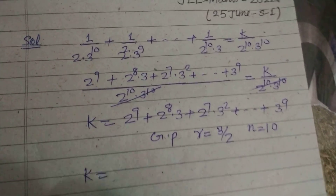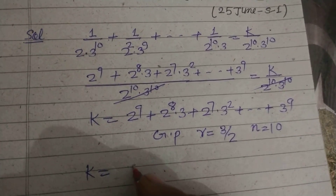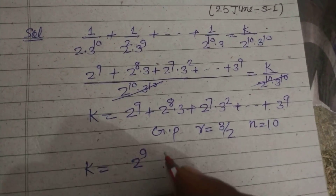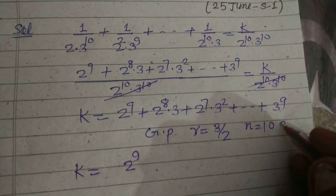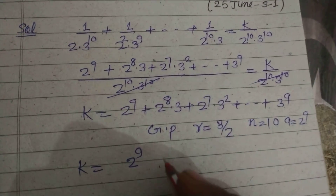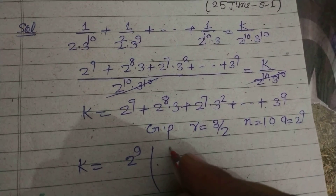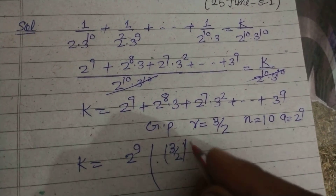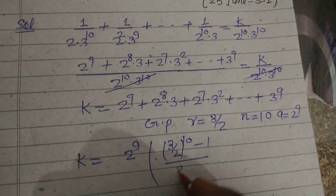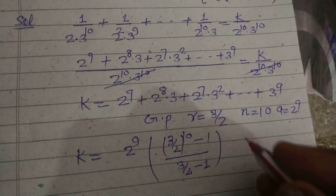So k equals the sum of 10 terms of this GP, with first term a = 2^9. Applying the GP sum formula: k = 2^9 · [(3/2)^10 − 1] / (3/2 − 1).